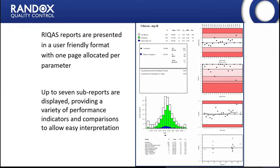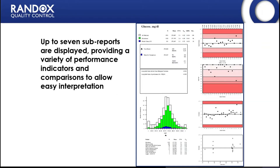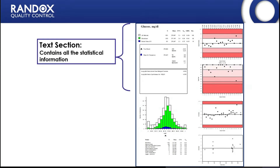The RICUS reports are presented in a user-friendly format with one page allocated per parameter. There are seven different sub-reports displayed on each of these analyte pages, providing performance indicators and comparisons to allow easy interpretation of results. We're going to look at each of these seven sub-sections of the report briefly to give you an overview of all aspects.